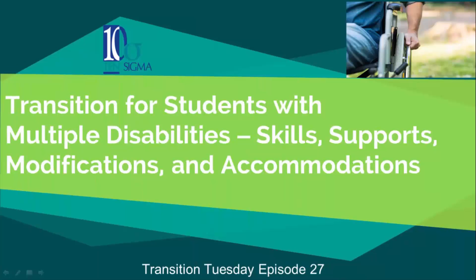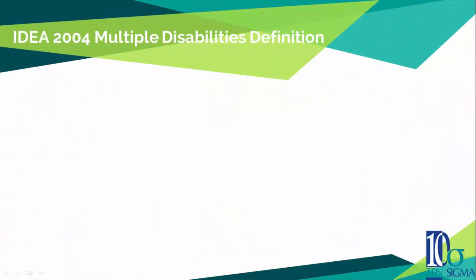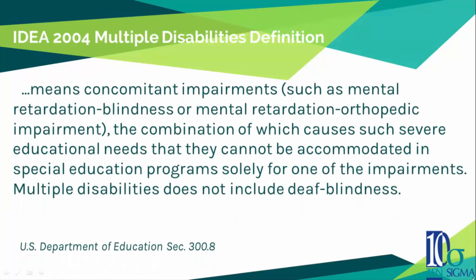Transition for students with multiple disabilities — skills, supports, modifications and accommodations. According to IDEA 2004, the multiple disabilities definition means concomitant impairments such as mental retardation and blindness or mental retardation and orthopedic impairment, the combination of which causes such severe educational needs that they cannot be accommodated in the special education program solely for one of the impairments. Multiple disabilities does not include deaf-blindness.